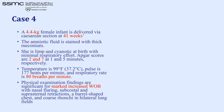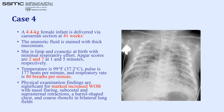Case 4: A 4.4 kg infant at 41 weeks' gestation, limp and cyanotic at birth. Apgar scores 2 and 7 at 1 and 5 minutes. Temperature 37.2°C, pulse 177, respiratory rate 80. Physical examination showed marked increased work of breathing with nasal flaring, subcostal and suprasternal retractions, barrel-shaped chest, and coarse rhonchi. The X-ray shows the typical fluffy cotton-wool appearance — consistent with meconium aspiration syndrome.